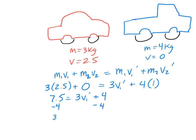So we get 3.5 equals 3V1 afterward, and we're going to divide by 3 and we get a final velocity of 1.17 meters per second. And it's positive, so actually the car is still moving forward.